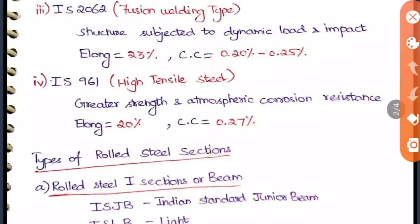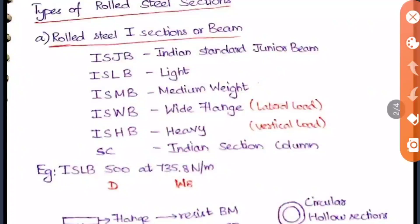IS 2062 is a fusion welding type code, generally used for structures subjected to dynamic load and impact. Its elongation is 23% and carbon content is 0.22 to 0.25 percentage. IS 961 is used for high tensile steel with greater strength, and it also resists atmospheric corrosion. Its elongation is 20% and carbon content is 0.27 percentage.